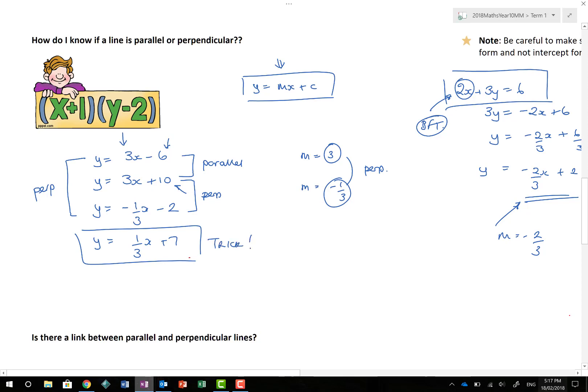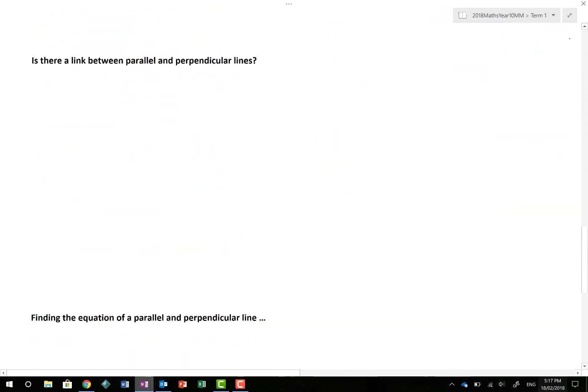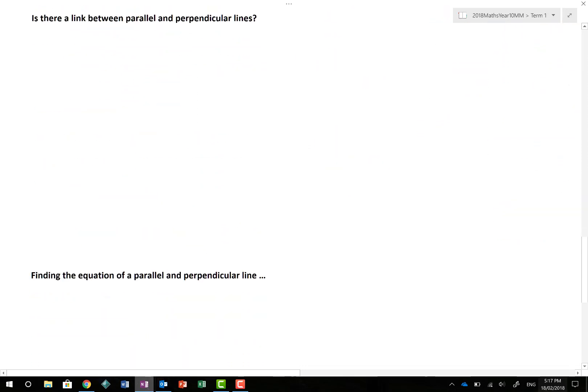In any multiple choice questions they're going to throw a trick in. Is there a link between parallel and perpendicular lines? Formally, we say that if we do m1 times m2 and they equal negative 1, then the lines are perpendicular to each other. If you have the gradient m equals a half, then the perpendicular gradient equals negative 2 on 1. Multiply those two together, 1 half multiplied by negative 2 on 1 gives me negative 1, and that's how we know the two lines are perpendicular.